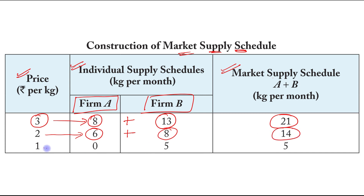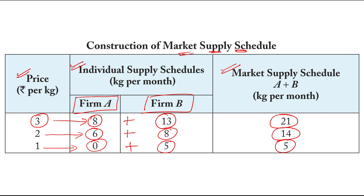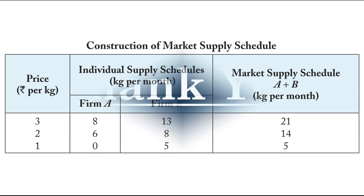Finally, at a price of rupees 1, Firm A is producing 0 kg per month and Firm B is producing 5 kg per month. So the market supply is 0 plus 5, which equals 5 kg per month. Simple — thank you.